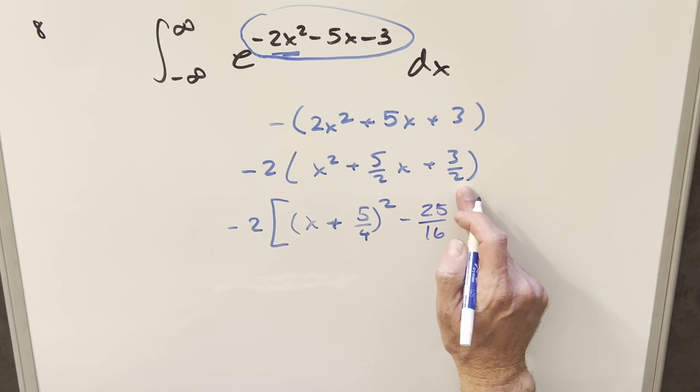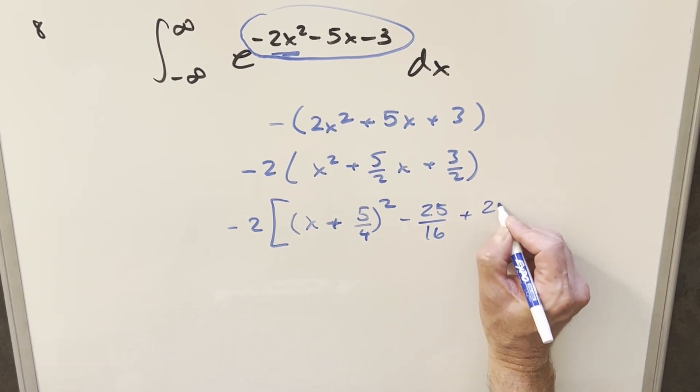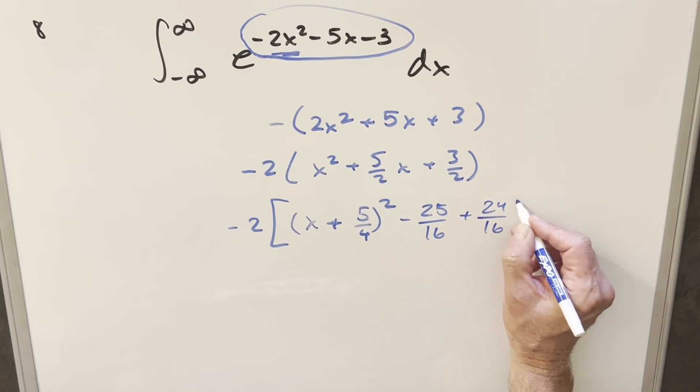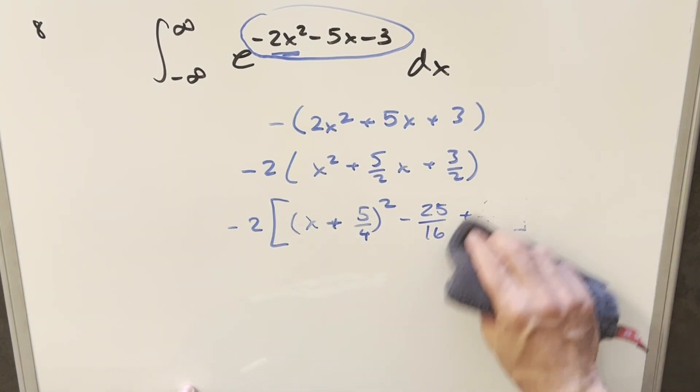And then let's add in this part, but let's get a common denominator. So if I multiply by 8 over 8, this becomes 24 over 16. But then 24 sixteenths minus 25 sixteenths is just going to be minus 1 over 16, so let me fix that.